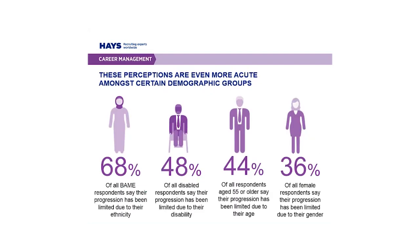Further cuts of the data show that certain demographic groups are more likely to believe their career progression has been limited. 68% of all BME respondents say their progression has been limited due to their ethnicity, compared to just 8% of White British respondents. 36% of all female respondents say their career progression has been limited due to their gender, compared to only 9% of male respondents. 48% of those who disclosed a disability say their progression was limited by their disability, and 44% of respondents aged over 55 say their progression has been limited due to their age.